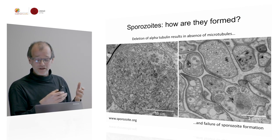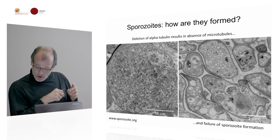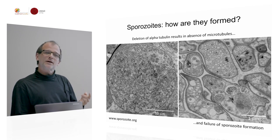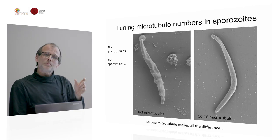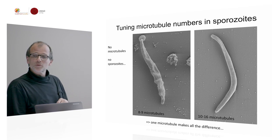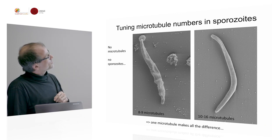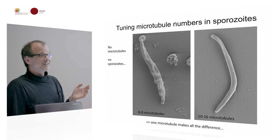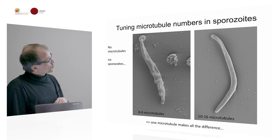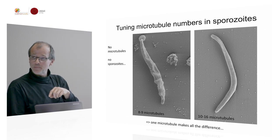There seems to be suddenly a lot of multivesicular bodies formed, but that's just some random failure of parasite formation. We also thought that if we can knock them out, we can also knock back the microtubules and tune them. So we managed to generate parasites that have only eight microtubules, another line with nine, another with ten, and so on. We see a very nice threshold: up to nine microtubules per parasite, you get very badly shaped parasites that are totally useless for infecting anything further down the life cycle, while just one more microtubule makes the parasite sufficiently efficient to enter into the salivary gland of the mosquito and be sped back into your skin.